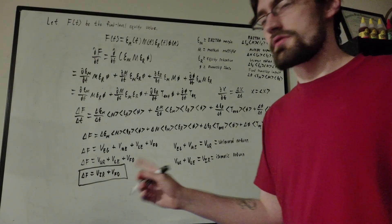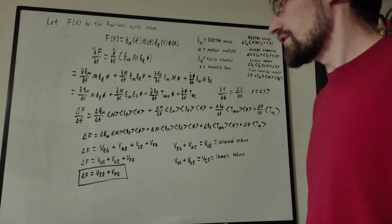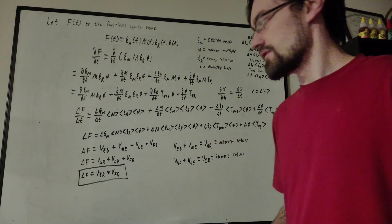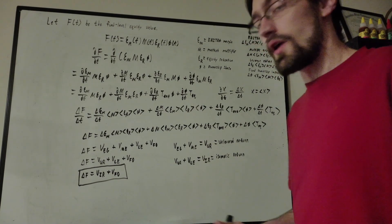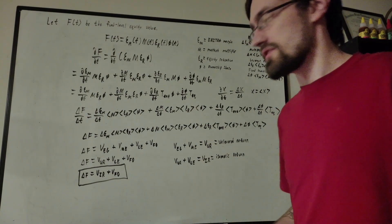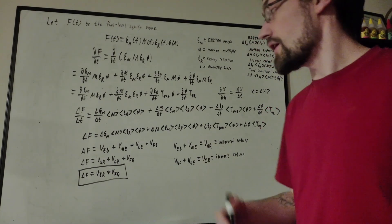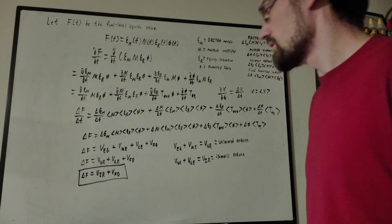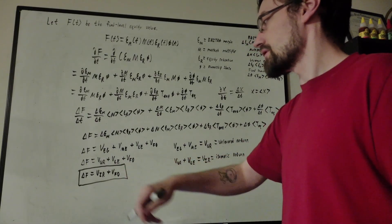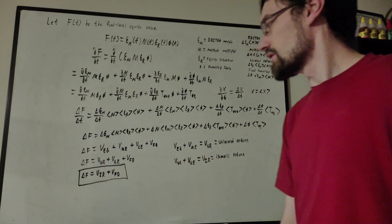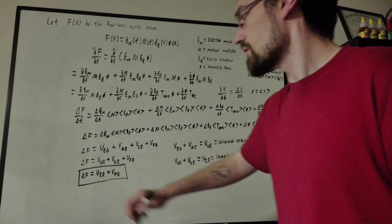Notice something interesting here: this does not rely on any type of revenue generation. There can be negative revenue, no revenue, or positive revenue. What matters is that there's some type of dynamic shifting between monetary hands, and this can be a non-zero effect.